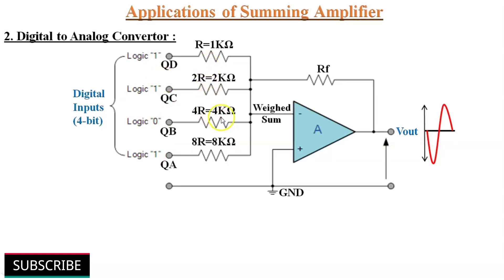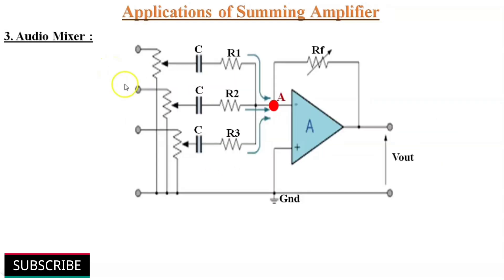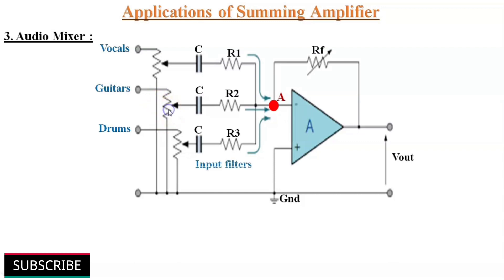A summing amplifier can also be used as an audio mixer. Different sounds like vocals and instruments can be converted to specific voltage levels using transducers and connected as inputs of the summing amplifier. By using the virtual ground of the inverting summing amplifier, no interference will occur because each signal is applied through a resistor with the other end connected to the ground terminal.